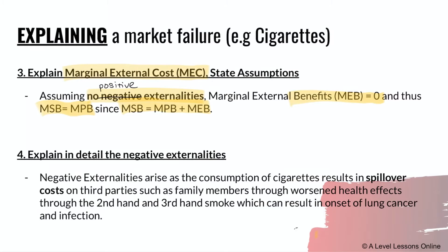Negative externalities arise as the consumption of cigarettes results in spillover costs on third parties such as family members, through worsened health effects from second-hand and third-hand smoke, which can result in the onset of lung cancer and respiratory infections. Whenever you're explaining the marginal external cost or negative externalities, you want to detail exactly why it is a cost to third parties — in this case it's a health hazard affecting family members and colleagues around the smoker.